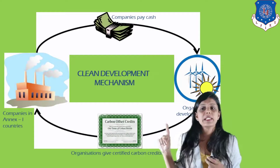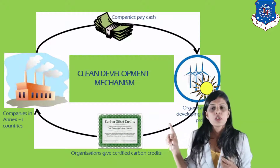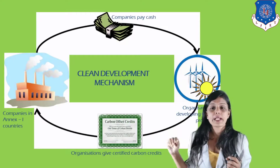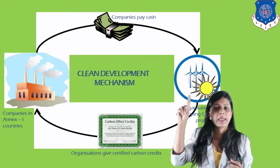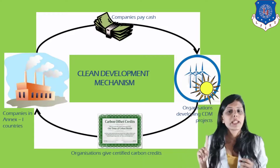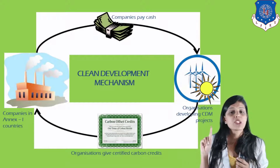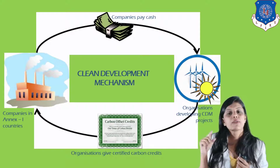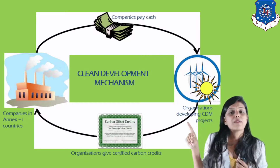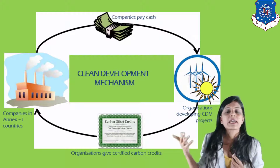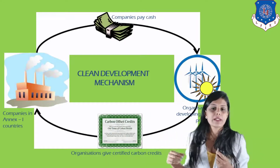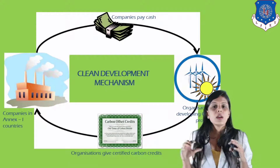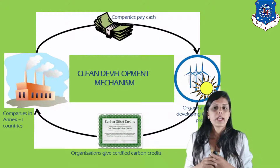Companies in NX1 countries with industries releasing large amounts of carbon dioxide pay cash to organizations in developing countries for CDM projects — such as solar energy and wind energy. In return, they receive carbon credits, thereby maintaining an acceptable level of pollution in the atmosphere.